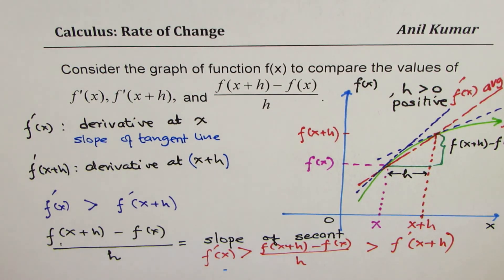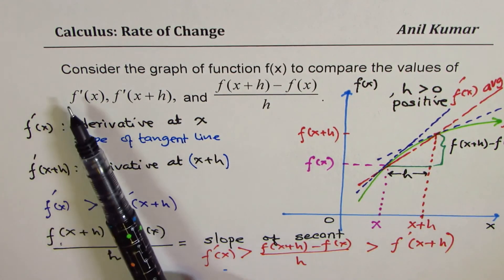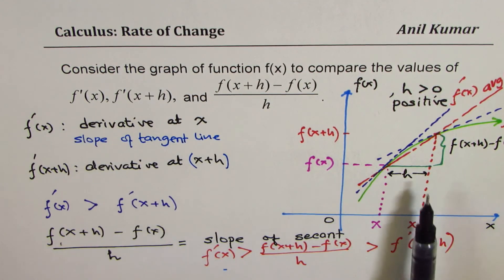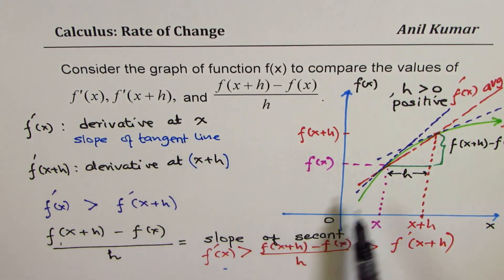So if you're to write in decreasing order, then the highest value, numerical value, will be of the derivative at x for the given function. Specifically for this function, the graph of this function given, and the lowest value will be for the derivative at x plus h.